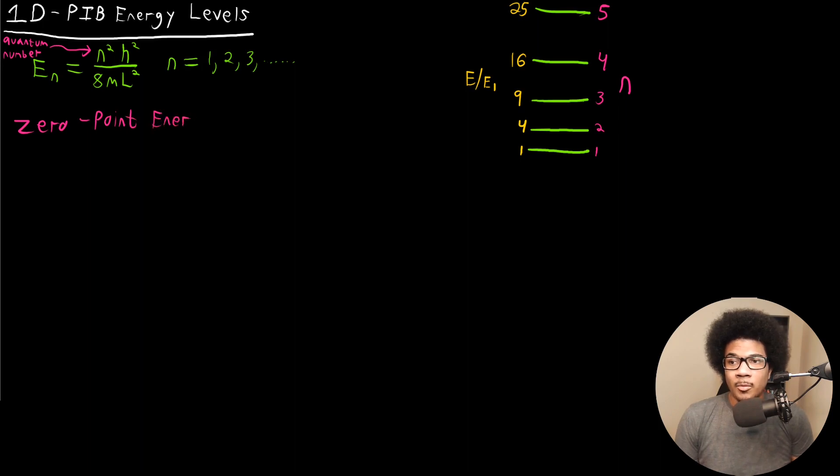So the zero point energy, in the case of the one-dimensional particle in the box, is the energy when n is equal to one. And so that's just going to be h squared over 8mL squared.